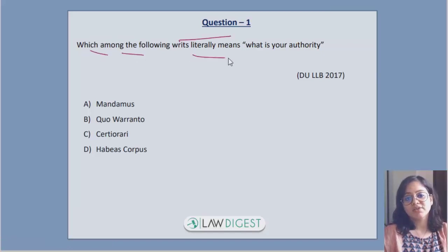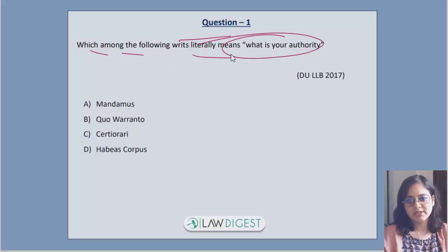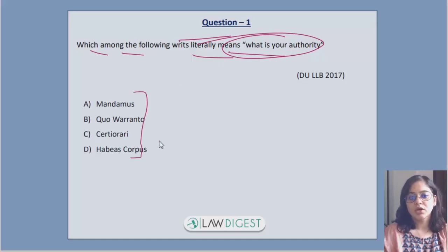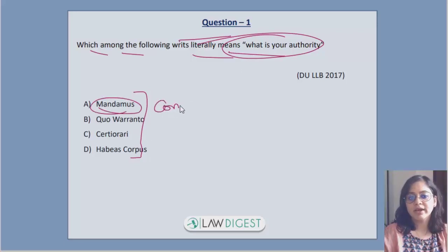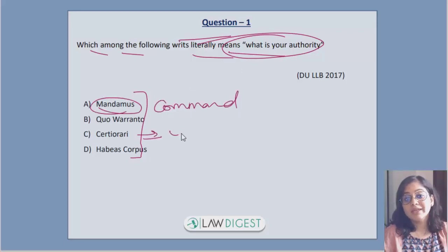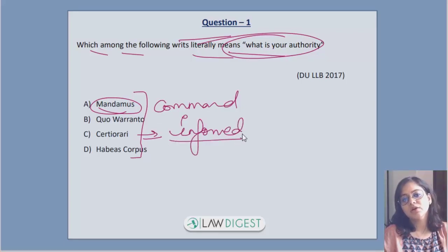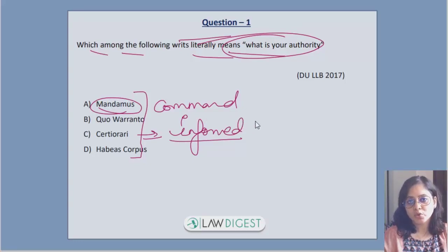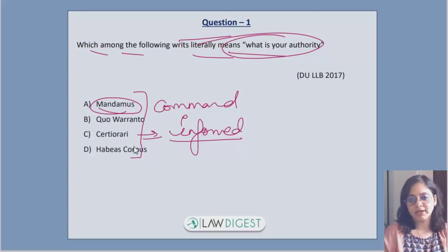Starting with the first question: which amongst the following writs means 'what is your authority'? Although constitutional law is a charter, we need to know writs individually also. The legal term 'certiorari' means 'we command to be informed of' — like when a superior court stops the order of a lower court from further implementation.